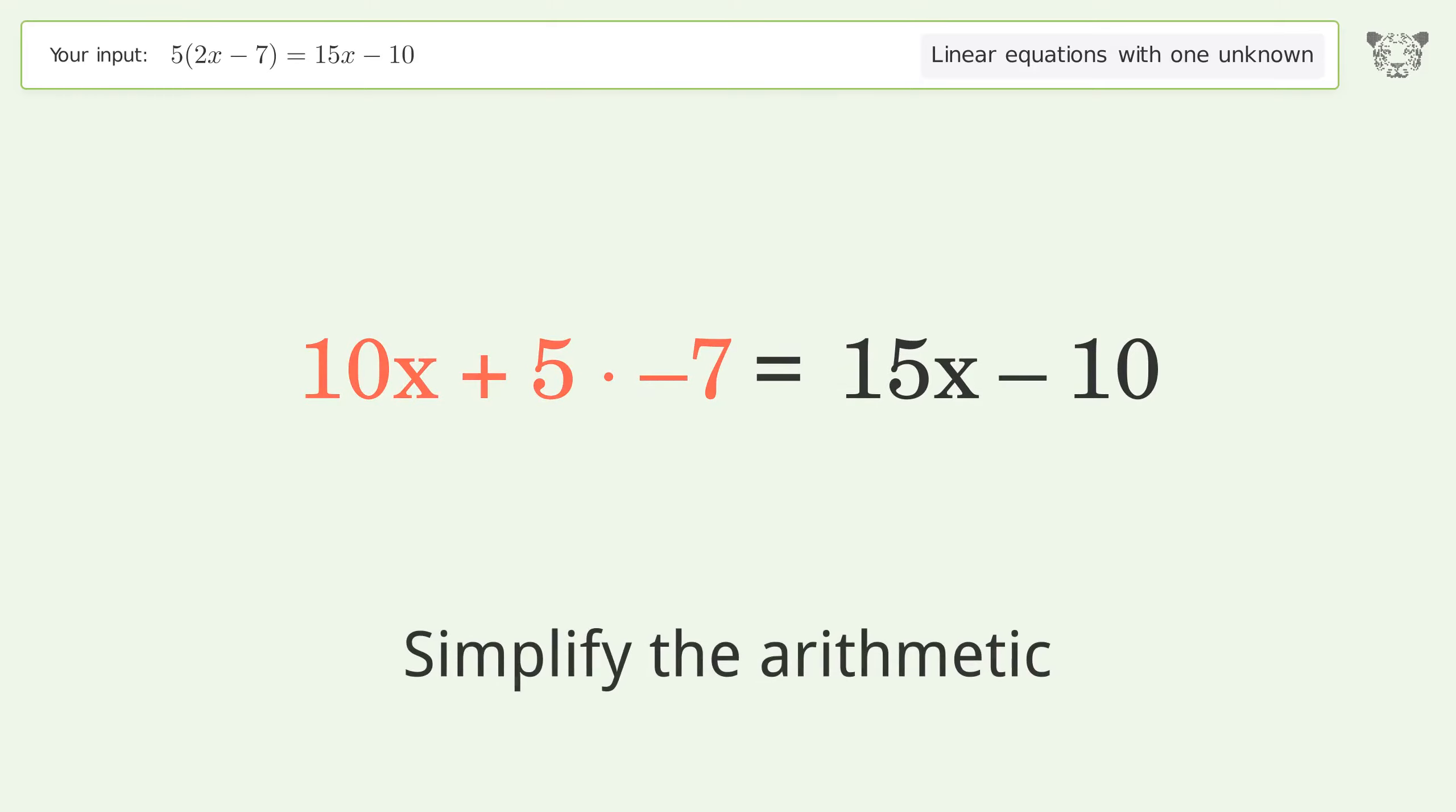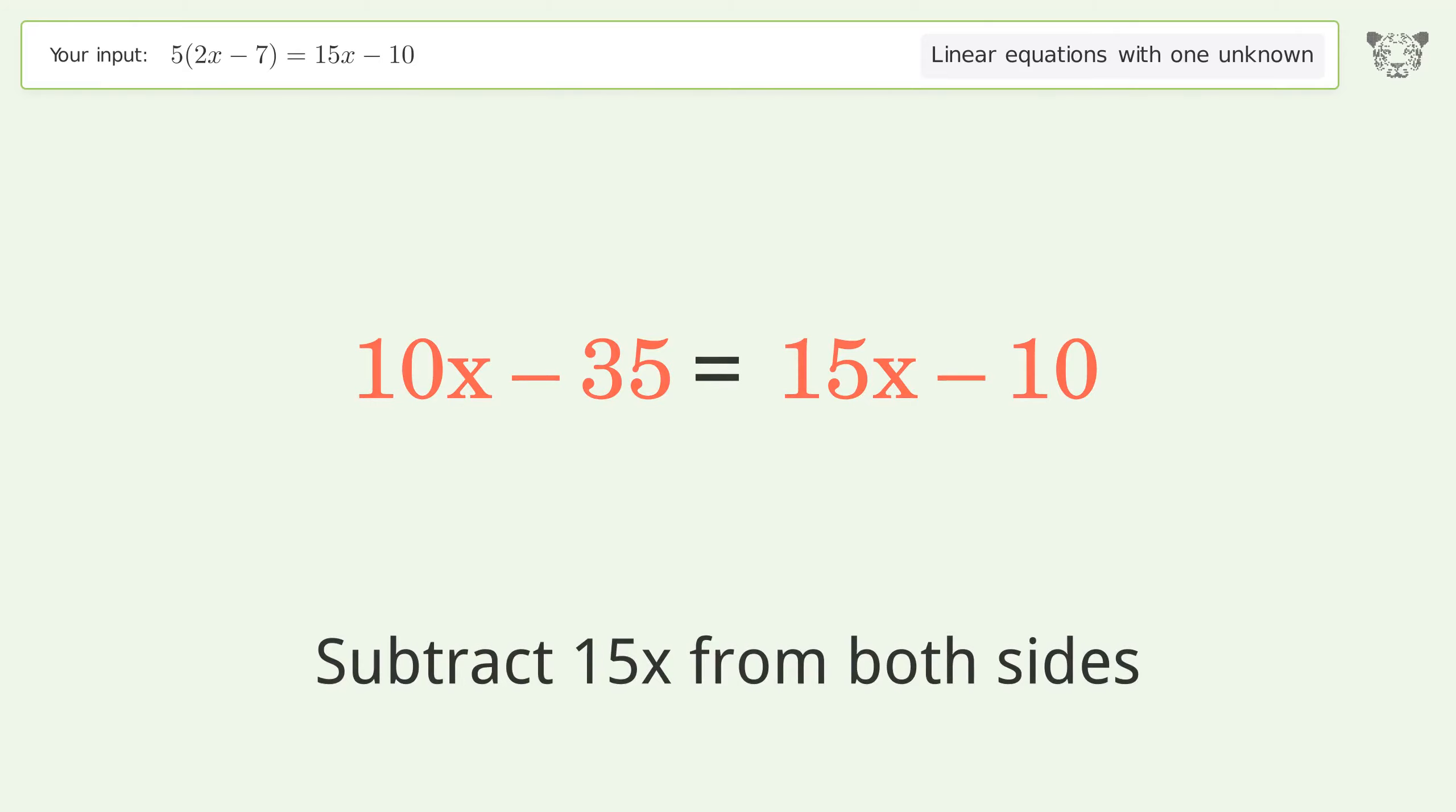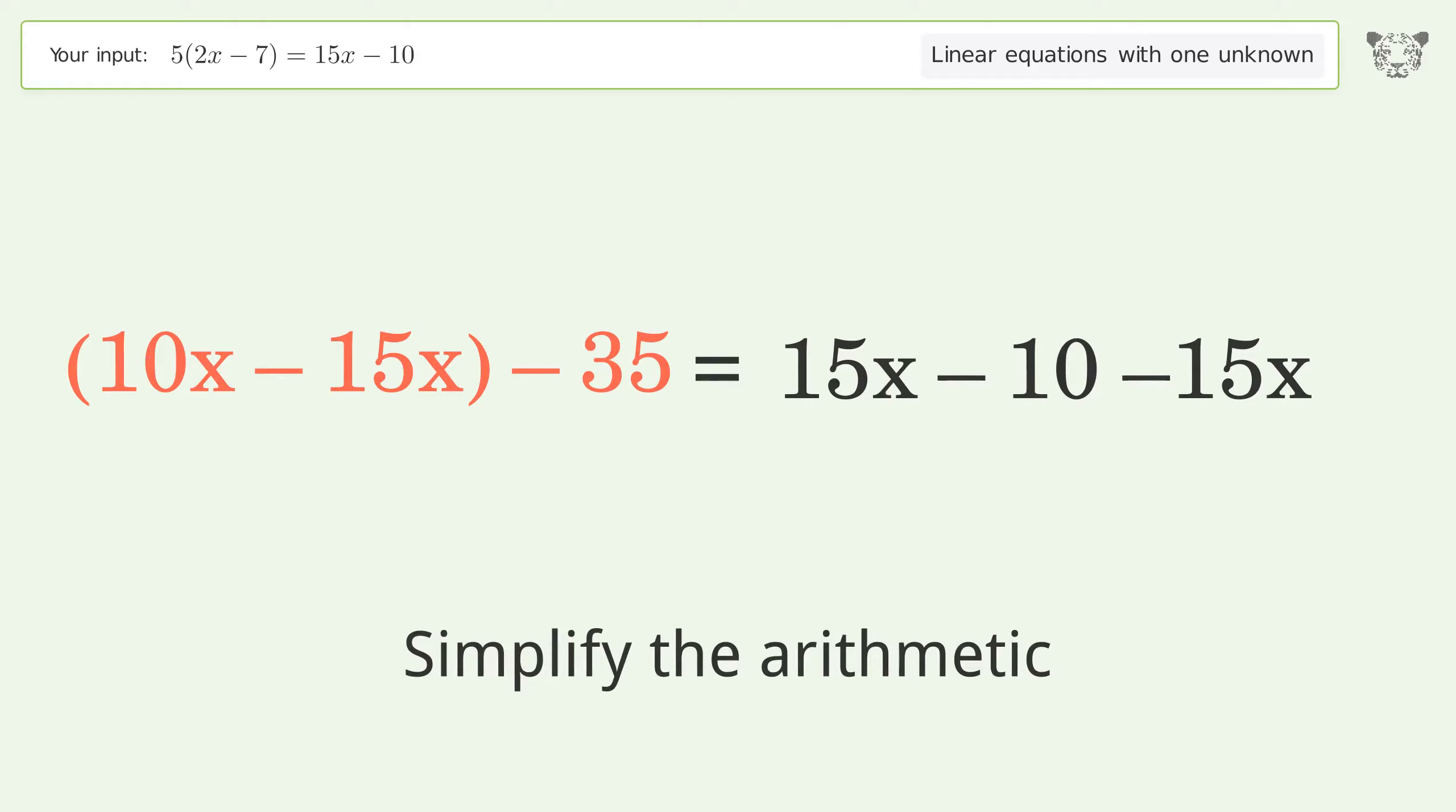Simplify the arithmetic. Group all x terms on the left side of the equation. Subtract 15x from both sides. Group like terms. Simplify the arithmetic.